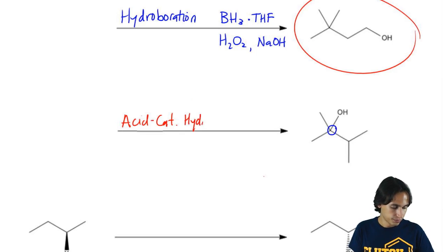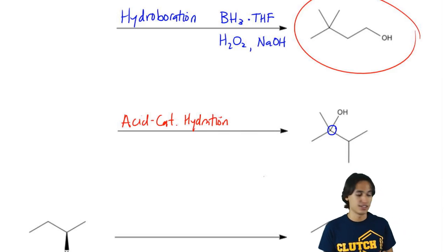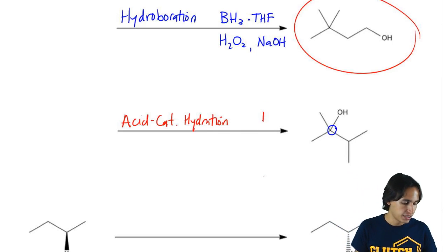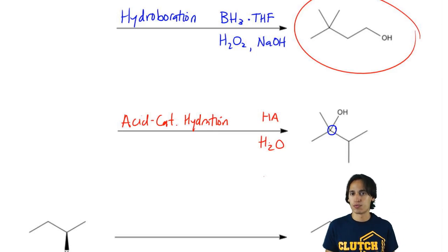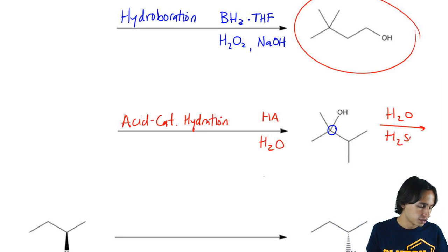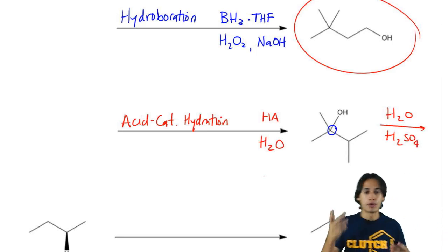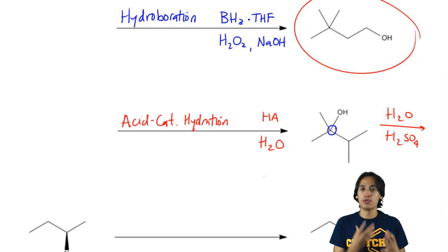And the reagents for this one were much easier. It was really just any strong acid. So I'm just going to put here HA over water. But most commonly the acid that we would use is sulfuric acid. So most commonly what you're going to see is H2O over H2SO4 or the other way around too. Both are fine.